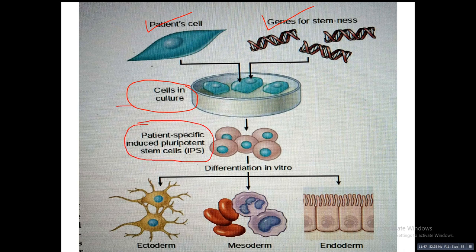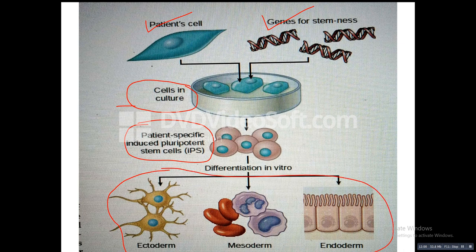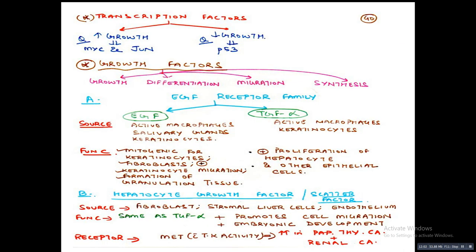Regarding transcription factors — an important MCQ point: certain transcription factors increase growth, such as MYC and JUN, whereas transcription factors which decrease growth include p53.